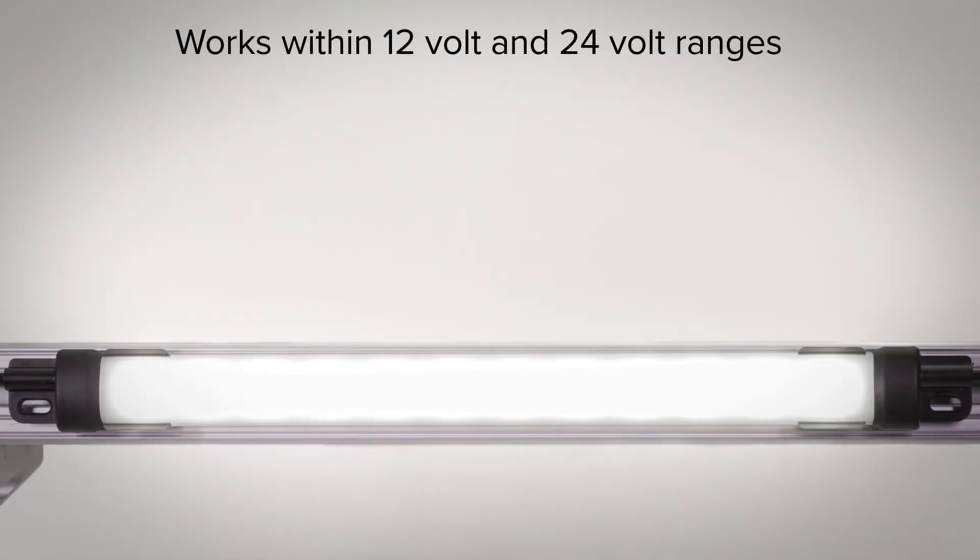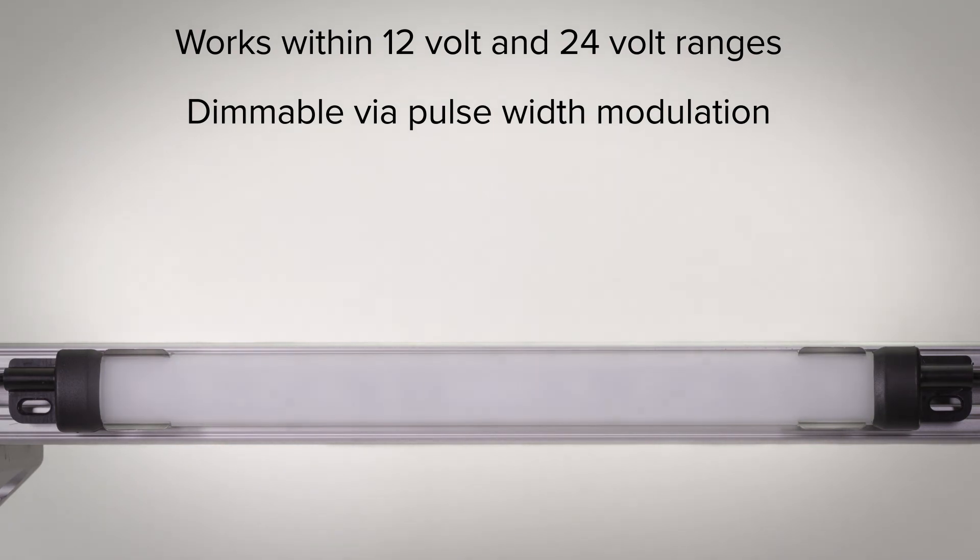The DC powered light works within both the 12-volt and 24-volt ranges and is dimmable via pulse-width modulation.